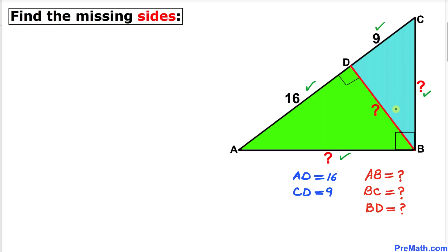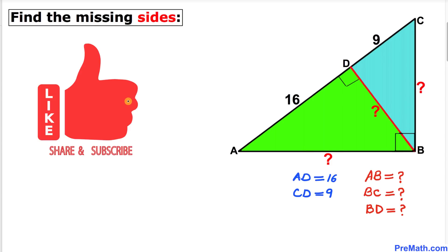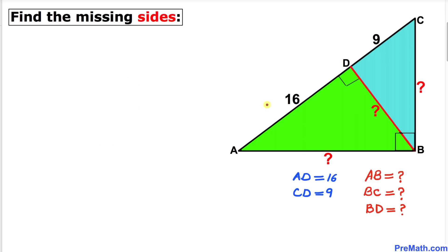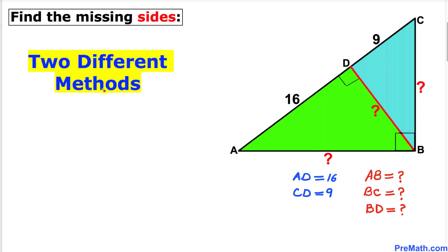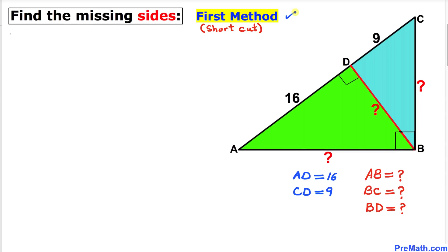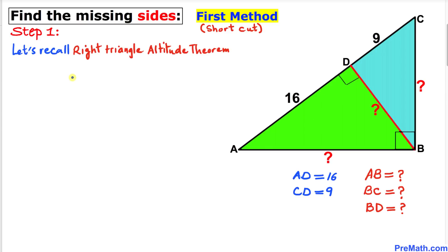Let's go ahead and get started with the solution. In this video I am going to share two different approaches. Here is our very first method — a really simple way to find the values of the missing sides. Our very first step: let's recall the right triangle altitude theorem.